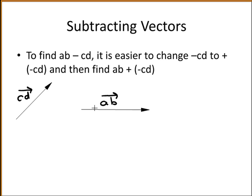To subtract two vectors — here we have the vector AB and the vector CD — to find AB minus CD, it's easier to change minus CD to plus minus CD. If this is the vector CD, then this is the vector minus CD. The negative vector just goes in the opposite direction. So to add these two vectors, you're going to find AB plus minus CD using the triangle law. You place the start of the second vector at the end of the first vector, so we're going to put our minus CD here.